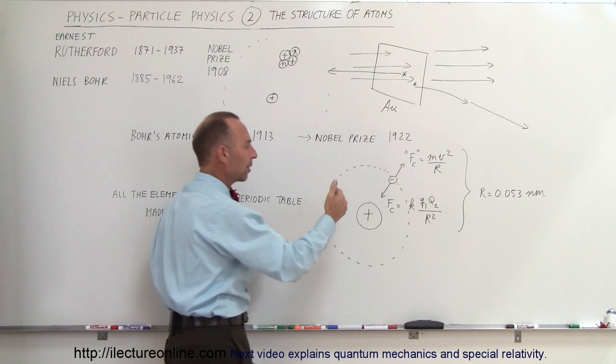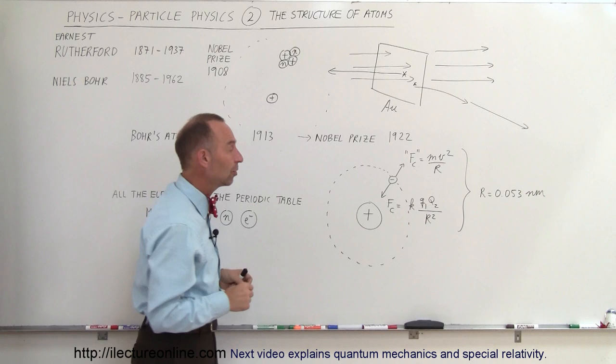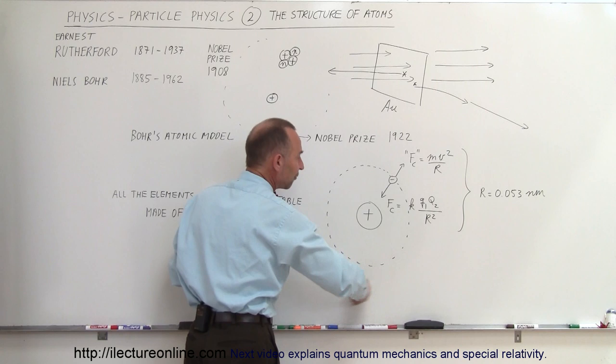So in order for a negative particle to be able to stay away from a positive particle, just like the Earth can stay away from the Sun because it goes around the Sun, if the Earth were to be stopped, the Sun would pull it right in and we would disappear into the Sun. Well, the same with these negative charges, they must be moving around the positive charge at very high speeds in order to be able to stay in the structure like that.